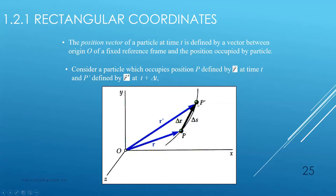Consider a particle which occupies position P, defined by vector r at time t, and then moving on to the next point P prime, defined by r prime — that is r plus delta r — at time t plus delta t.